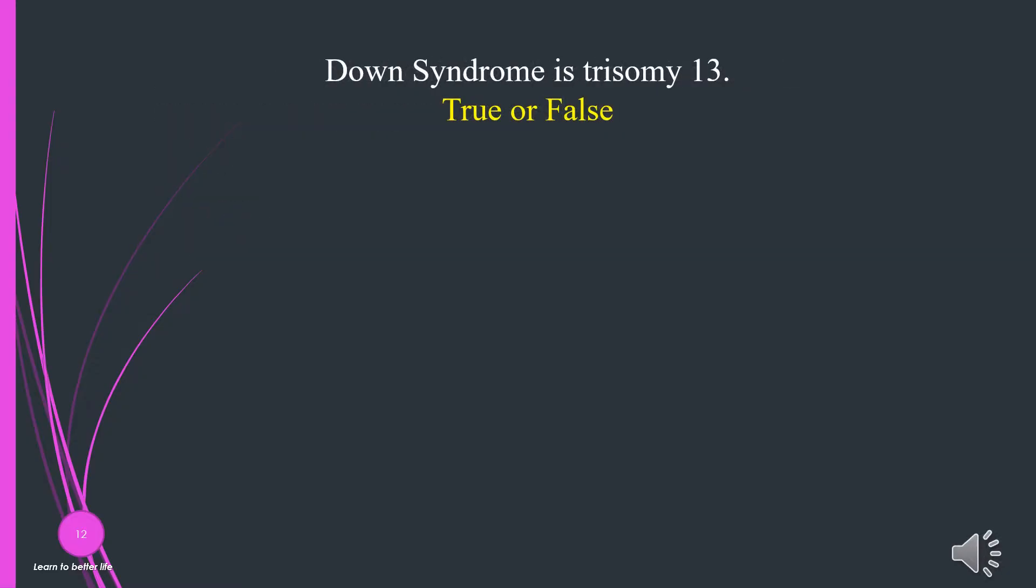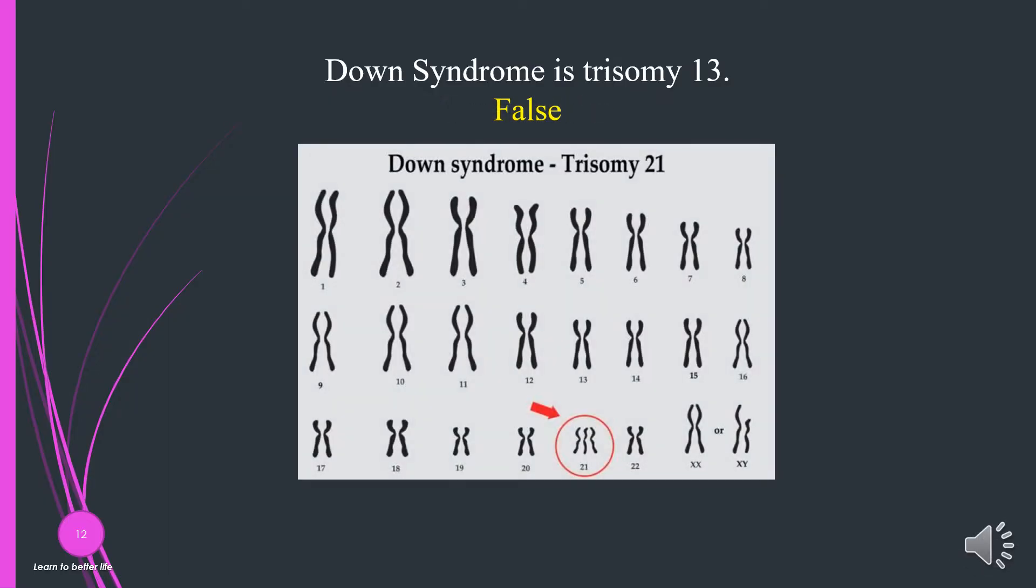Down syndrome is trisomy 13. True or false? False. It's trisomy 21.